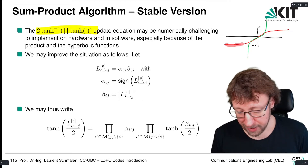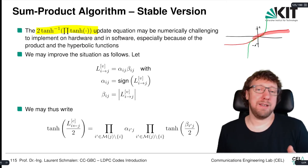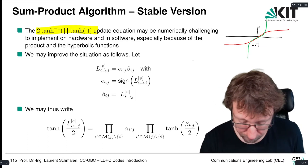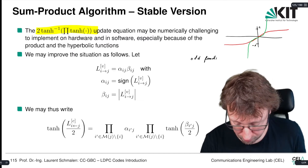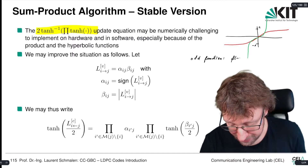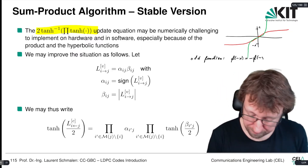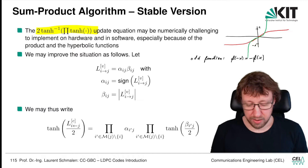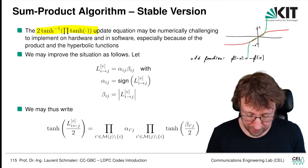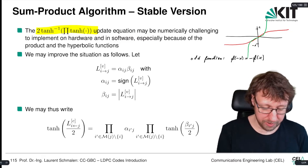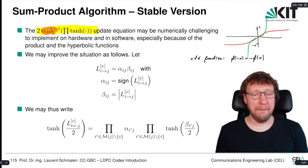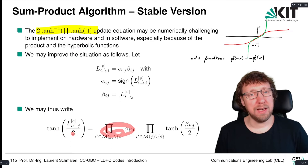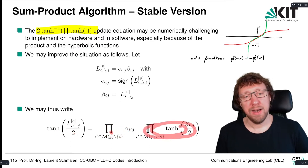Why do we do this? Because the hyperbolic tangent is an odd function, and an odd function has the property that you can take the sign out of the argument: f(−x) = −f(x). So recalling the message update with inverse hyperbolic tangent, we can put the two times inverse hyperbolic tangent on the left-hand side, and the output message equals the product of the signs of the incoming messages times the product of the hyperbolic tangents of the magnitudes.